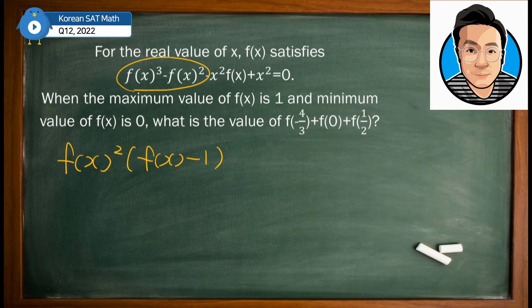And on the next two terms, we can pull x² out. Then it has to be negative x² times f(x) - 1. This is equal to 0.